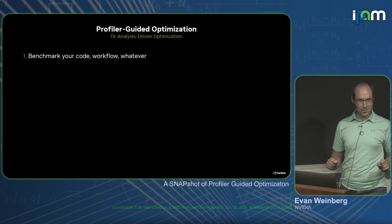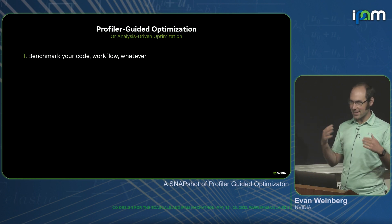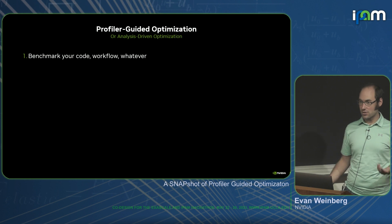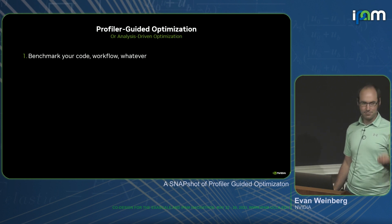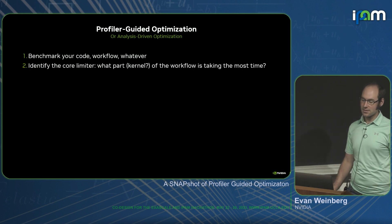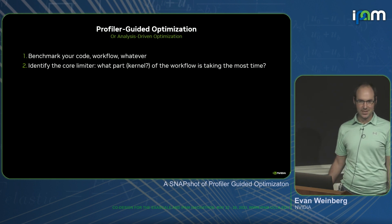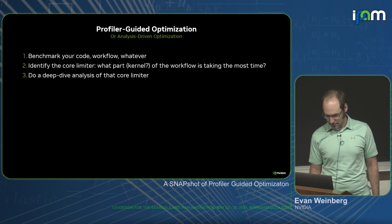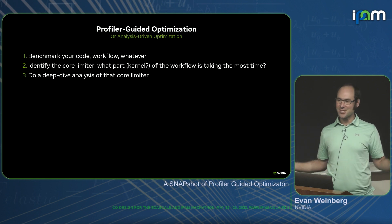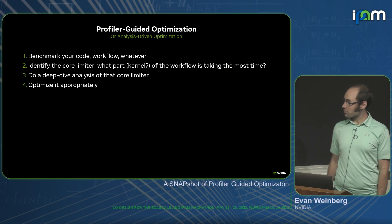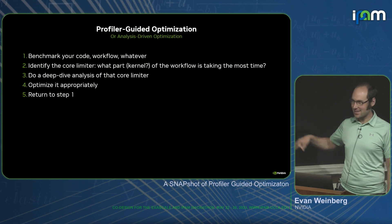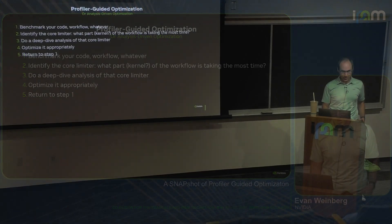This is the last slide you really have to pay attention to. Profiler-guided optimization, or analysis-driven optimization: sit down, benchmark your code, your workflow, whatever. Identify the core limiter — what kernel, communications, whatever takes the most time. Do a deep dive analysis of that core limiter, optimize it appropriately, and then return to step one. Keep doing this until you run out of funding or can do science fast enough.